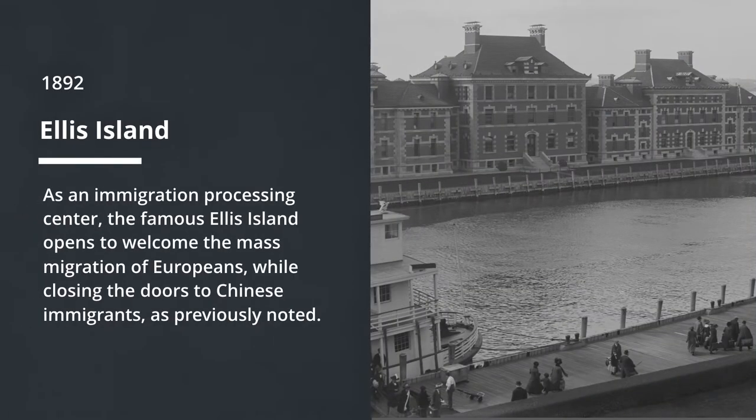In 1892, Ellis Island opened. The famous Ellis Island, as an immigration processing center, opened the door to the mass migration of Europeans, while at the same time excluding Chinese immigrants, as previously noted.